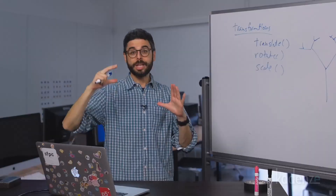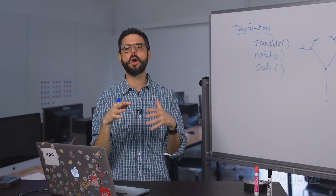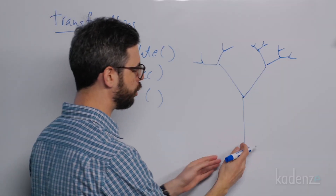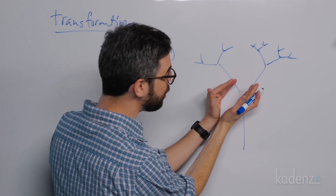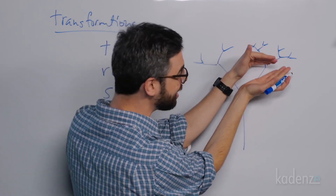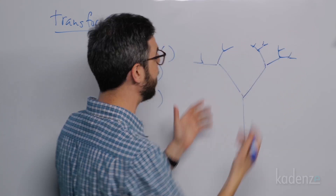These are functions that transform the coordinate space that you're drawing into. For example, you could draw a line, rotate that coordinate space, continue to draw a line, rotate that coordinate space, and continue to draw a line again.